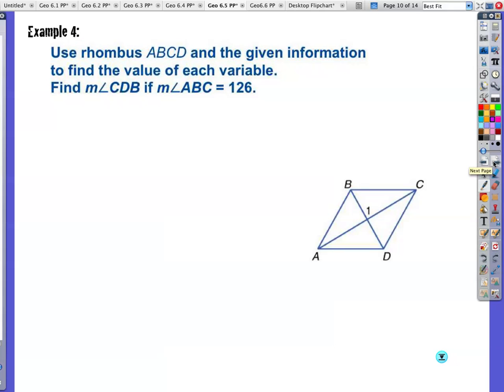Example four, use rhombus ABCD and the given information to find the value of each variable. The measure of CDB, CDB, this angle right here, if we know the measure of ABC, ABC. So this entire angle right here is 126. So we've got 126. Oh, yeah, what is this one going to be over here? It's going to be 126. They tell us it's a rhombus. A rhombus cuts the angles in half of those diagonals. So if I take 126 and divide it by 2, I'm going to have 63 degrees for each one of them. So the measure of angle CDB, is 63 degrees.